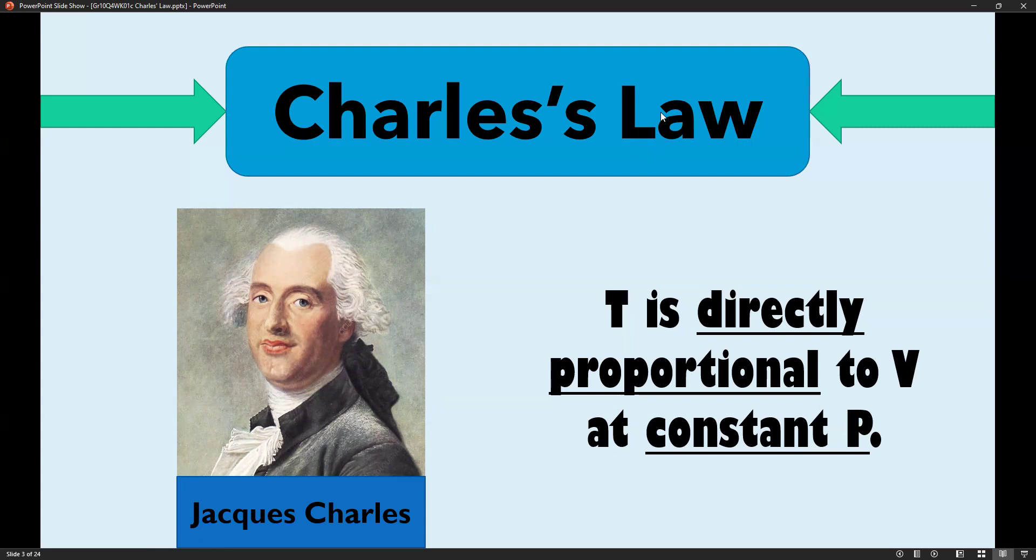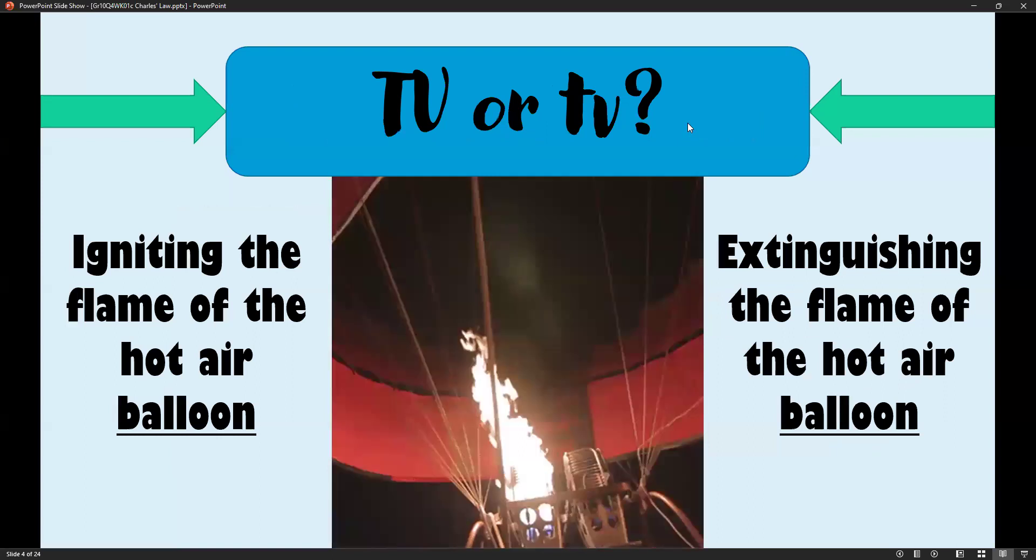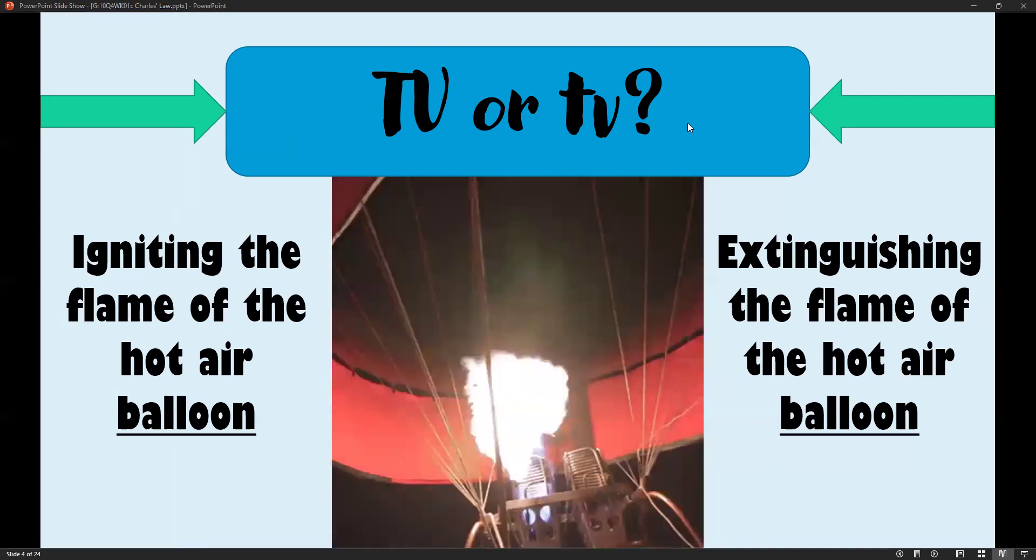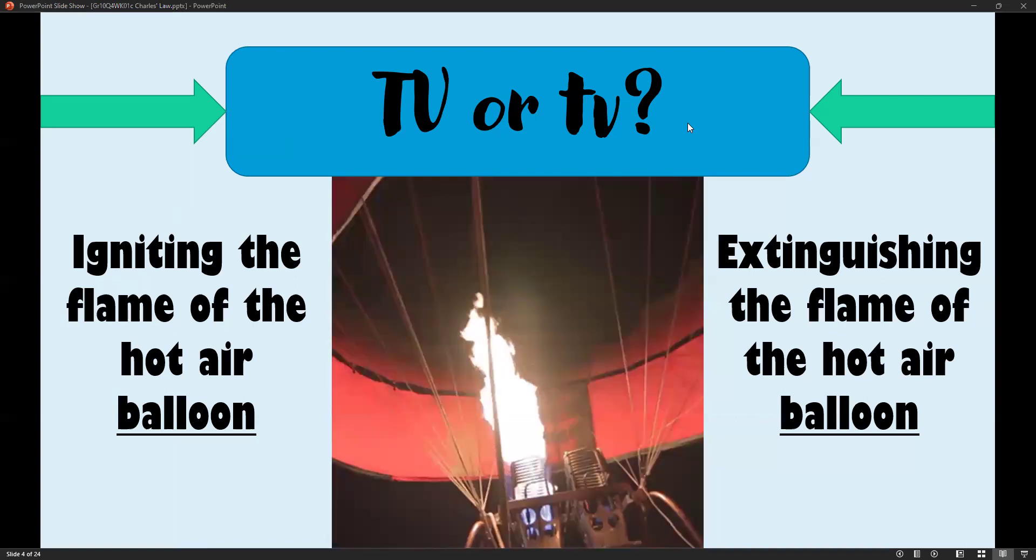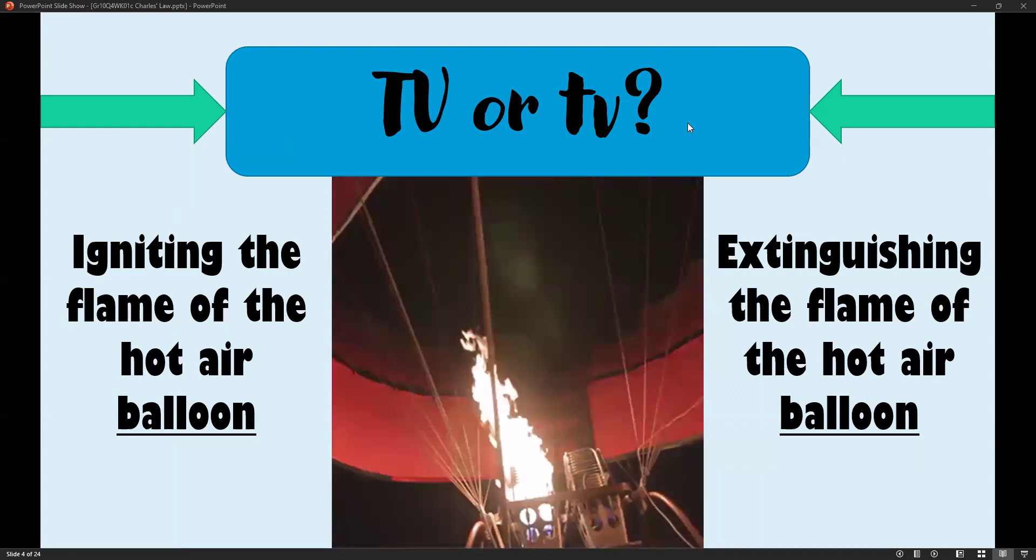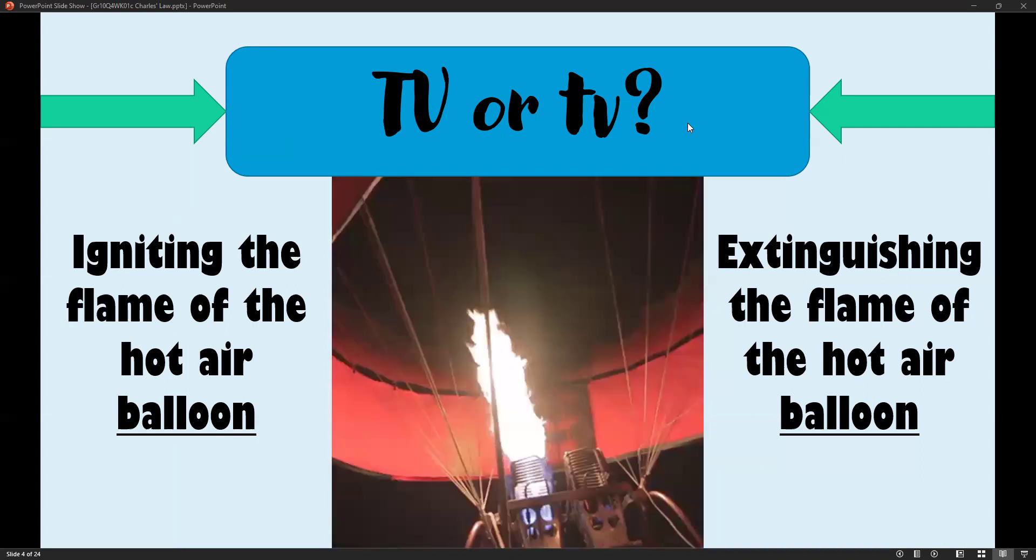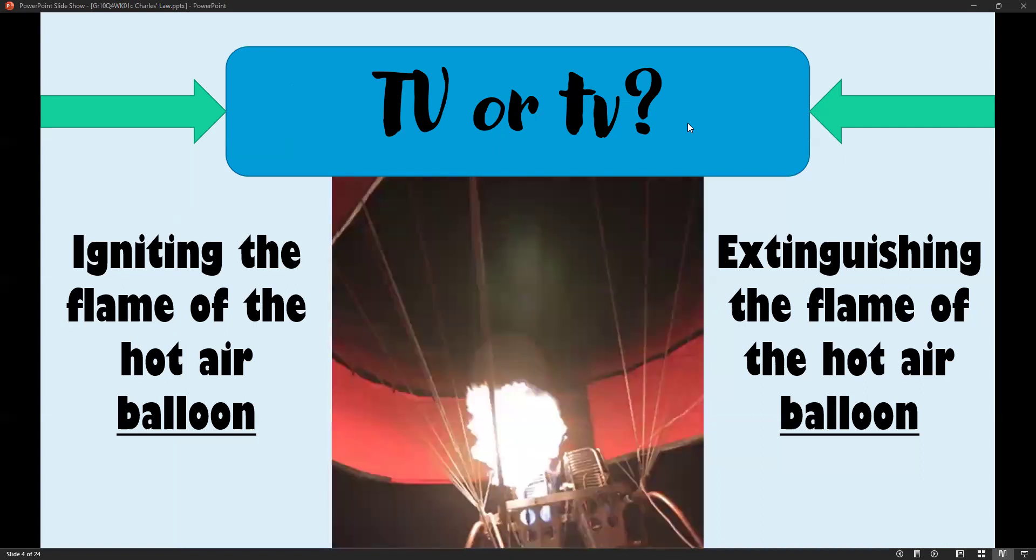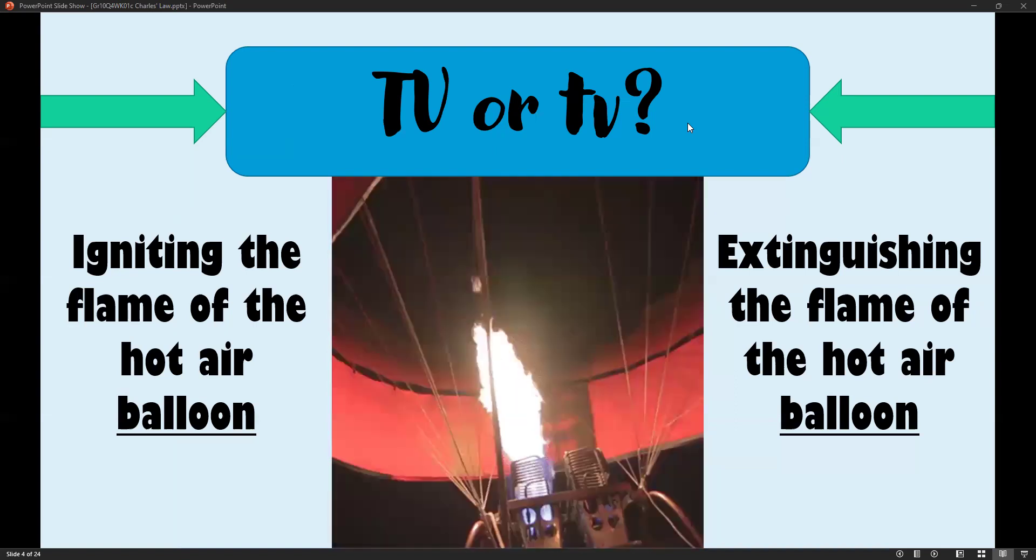If one variable decreases, the other also decreases. This time, our constant is pressure. Now let's tackle the two principles of Charles's Law. When there's higher temperature, there's also high volume. And when there's low temperature, there's also low volume.